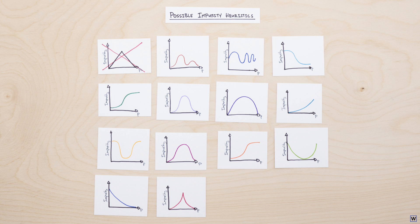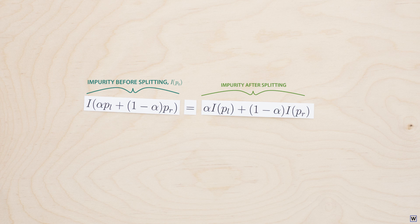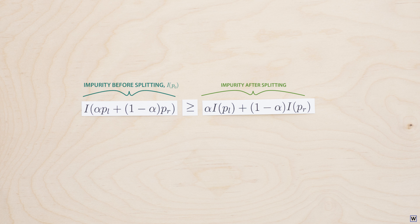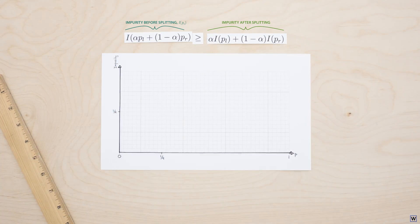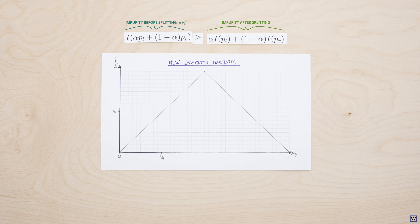So let's be a little more specific about the properties our impurity heuristic needs to possess. We know we don't want our impurity before splitting to equal our impurity after splitting. What we'd really like to see is for our impurity before splitting to be greater than our impurity after splitting. This would mean that our impurity decreases after splitting — exactly the kind of behavior we're looking for from a good split when growing our tree. It's probably still a good idea to have our impurity function equal zero when our node contains only positive or negative examples, and reach a maximum when our node is half negative, half positive.